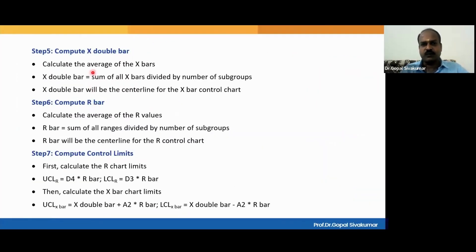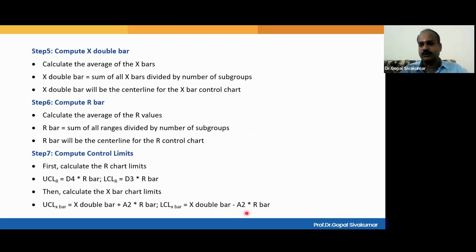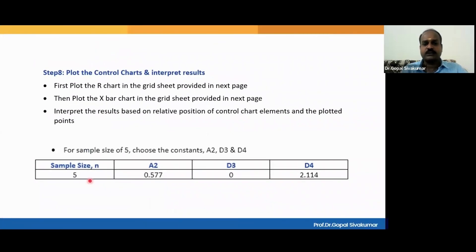Once the averages and ranges are found, calculate the average of the averages — that will be X double bar, the center line in your X bar chart. Then calculate the average of the ranges — that will be R bar, the center line of the range chart. Then compute the control limits, which are a function of statistical constants depending on the subgroup size. For subgroup size five, you need three constants: A2 = 0.577, D3 = 0, and D4 = 2.114. The formulas are: UCL for R chart = D4 × R bar; LCL for R chart = D3 × R bar; UCL for X bar chart = X double bar + A2 × R bar; LCL for X bar chart = X double bar − A2 × R bar.